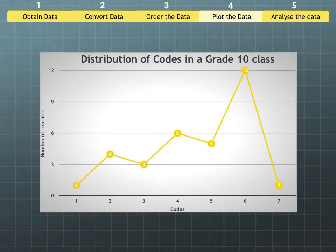Taking those exact results or that table that we've just created and ordered, we're now going to plot it on a graph. The codes go across the bottom and the learners up the side. One learner achieved code one, four learners code two, three code three, six code four, five code five, twelve code six, and one code seven. Straight away you can now see that there is a trend forming.